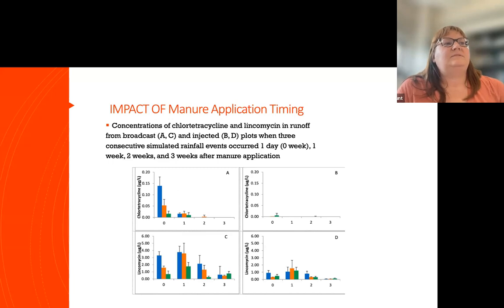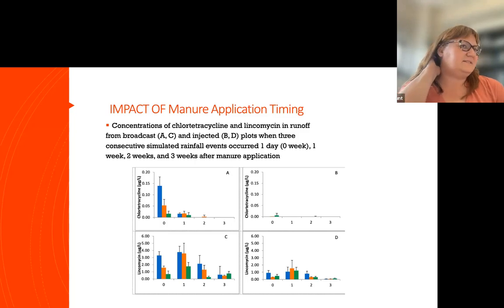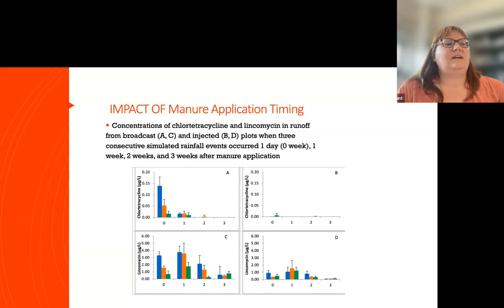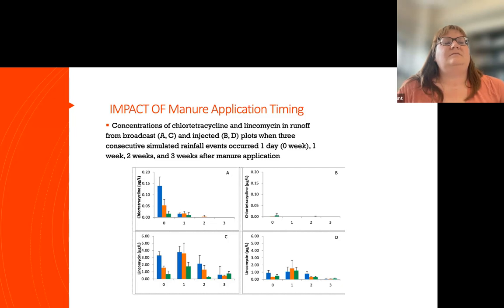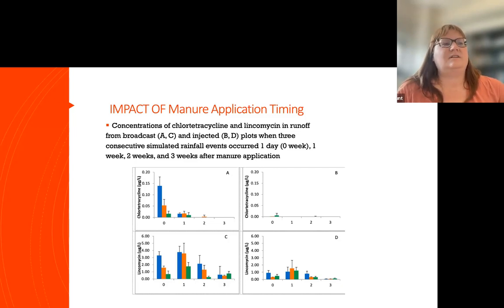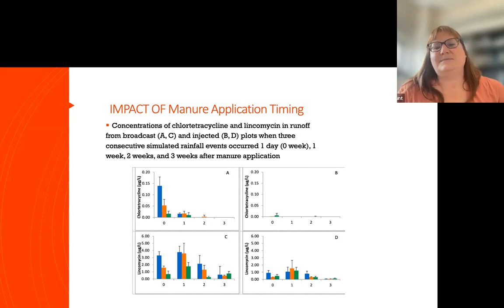In a separate study, we looked at transport of antibiotics — chlorotetracycline and lincomycin — in runoff when manure was either broadcast (plots A and C on the left) or injected (plots B and D), then rainfall simulations were run. Our rainfall simulations occurred with a gap between application of manure and when rainfall occurred. We were incredibly fortunate that summer — we had no natural rainfall, which was very fortunate for our experimental purposes, as we were able to control the rainfall.